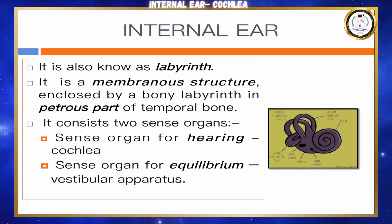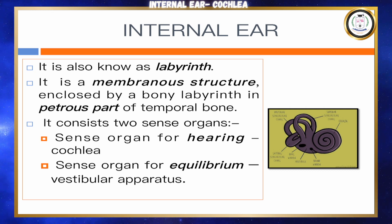The internal ear is also known as labyrinth. It is a membranous structure which is enclosed by a bony labyrinth in the petrous part of the temporal bone.